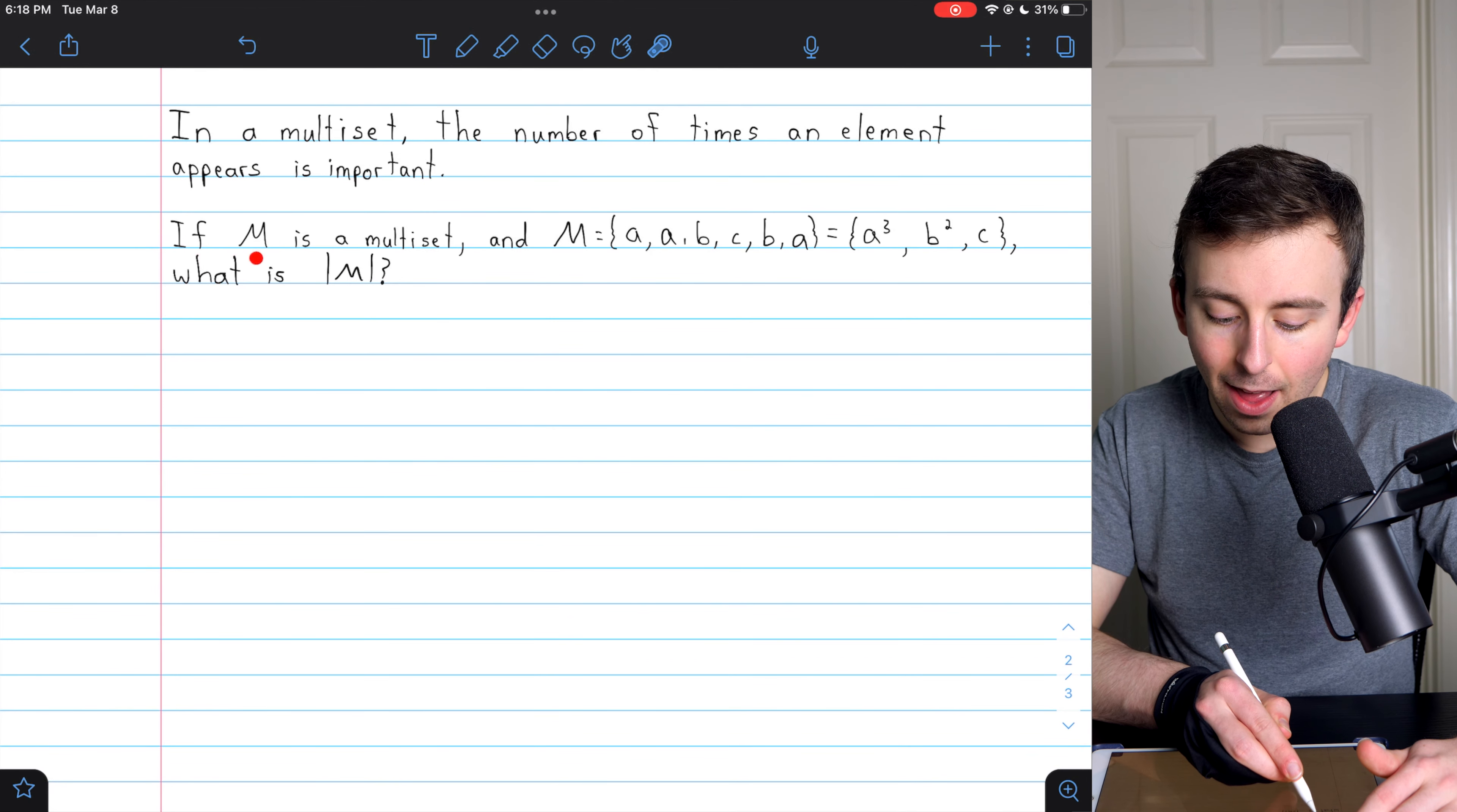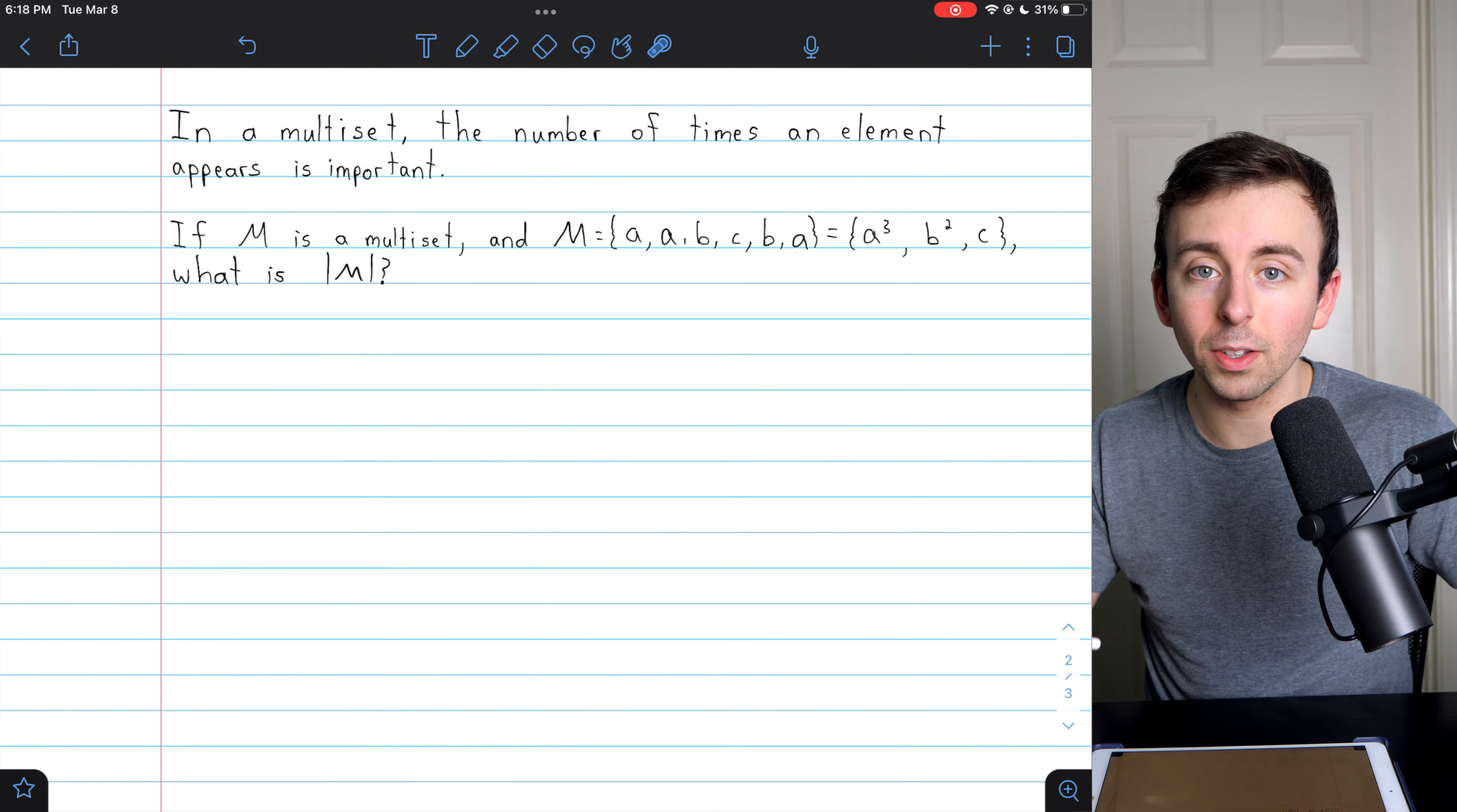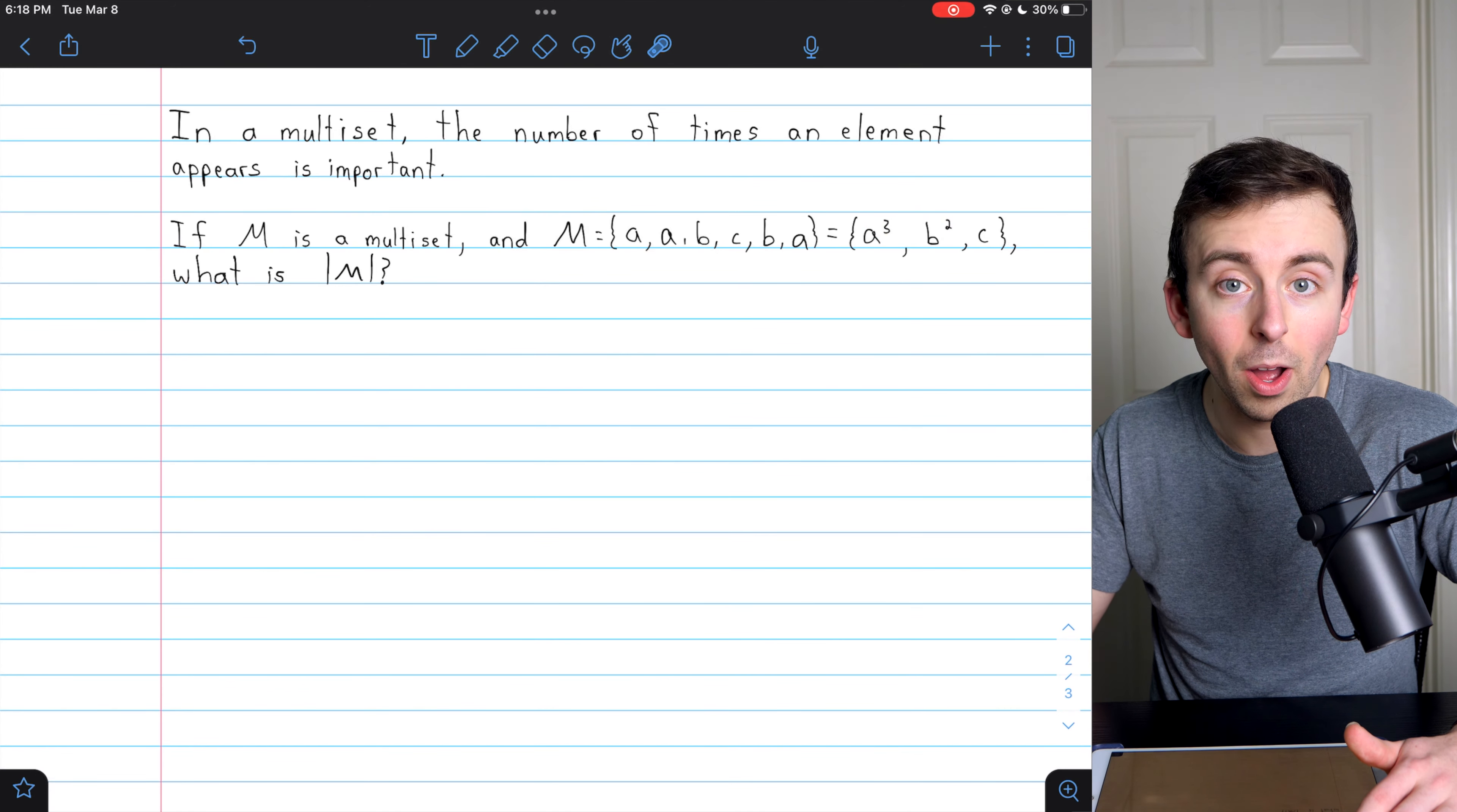Here's an example. If M is a multiset and M equals the same set we were looking at a minute ago—A, A, B, C, B, A—we could also write that like this. This is some common notation for multisets where we put what's called the multiplicity of each element in the superscript. The multiplicity is just the number of times an element occurs. A occurs three times, and so you see that indicated in its exponent. B occurs twice, and so on.